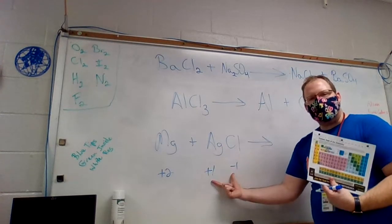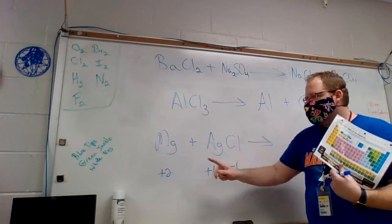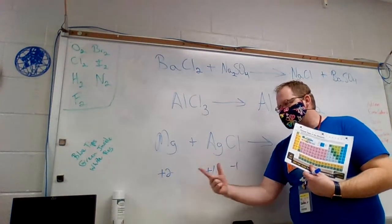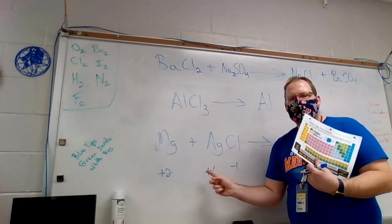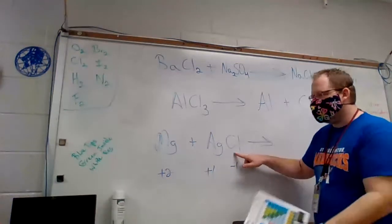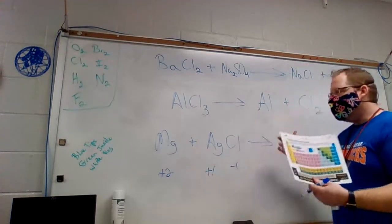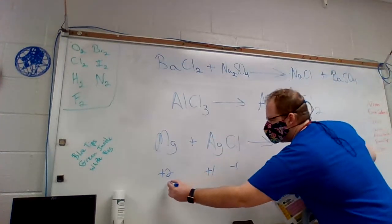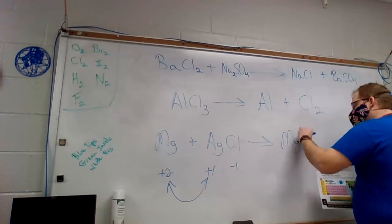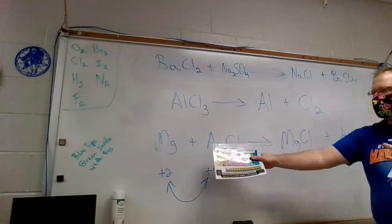From the given formula AgCl, since chlorine is minus one and is attached to only one silver, the silver must be plus one — the plus and minus have to balance out evenly. Now when I flip things around, I can't swap magnesium with chlorine because then silver and magnesium would be next to each other and they're both positive — that won't work. The positive magnesium needs to attach to the negative chlorine, so the two positives switch places: magnesium swaps with silver. That gives me magnesium with chlorine, plus silver by itself.